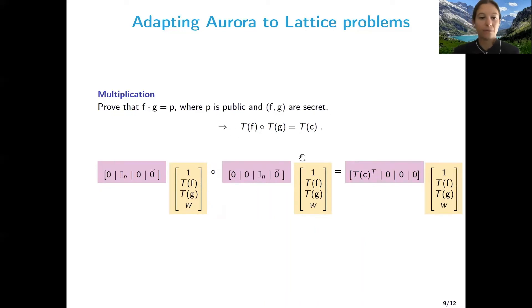Now for multiplication. So we want to prove that F times G is equal to P, where P is public and the other two are secret. So this is actually quite easy because it's enough considering the same secret vector where W is a public value and it could be set to zero, it has no impact on the proof. We're going to now set the matrix A as having zero in the first component because we want to neutralize the one which is there by, because of the structure of the R1CS relation. And then the identity matrix multiplies F and zeros are multiplying the rest so that we eliminate this part of the vector. And on this side, now we have just T(F), so the representation of F through the number theoretic transform.